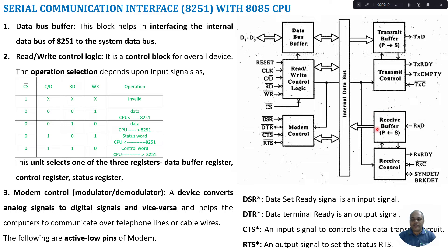There is also a receive buffer, which converts serial data coming through the RXD line into parallel data. This parallel data goes into the data bus buffer and is then read by your CPU through D0 to D7. The receiving part is controlled by the receive control signal, which manages receiver ready and the receiver clock — determining the rate at which data should be received. Synchronous Detect or Break Detect is used while receiving data so that the data on the RXD line is synchronized with the internal clock signal of the 8251.